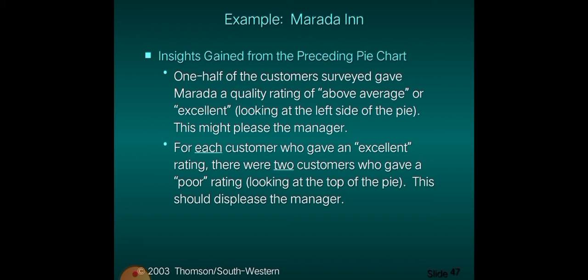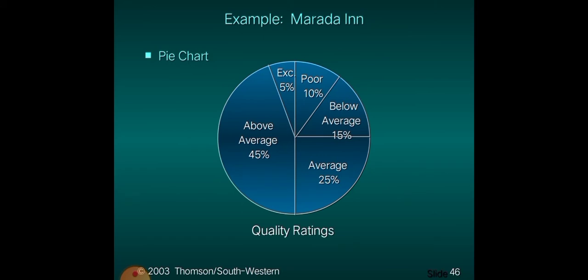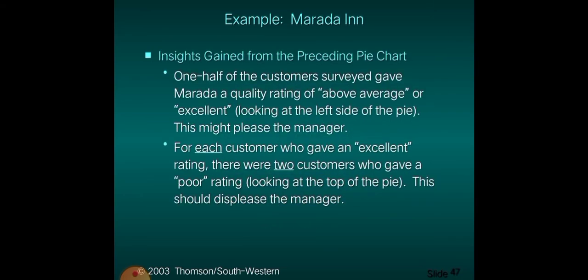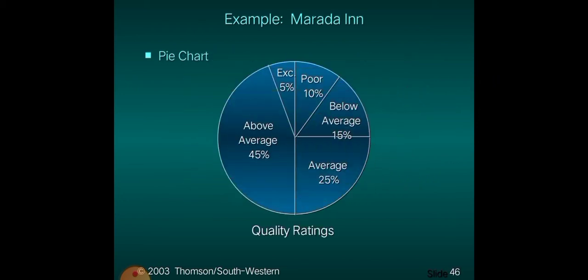Insights gained from the preceding pie chart: one half of the customers surveyed gave Marada a quality rating of above average or excellent, looking at the left side of the pie — this might please the manager. However, for each customer who gave an excellent rating, there were two customers who gave a poor rating, looking at the top of the pie — this should displease the manager. So it is easy to draw insights directly from a pie graph or bar graph.